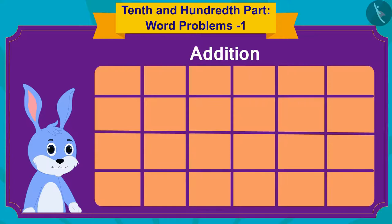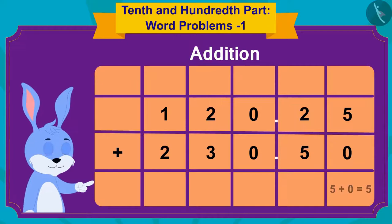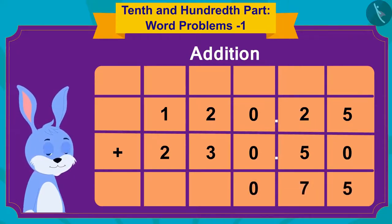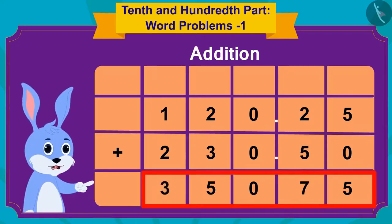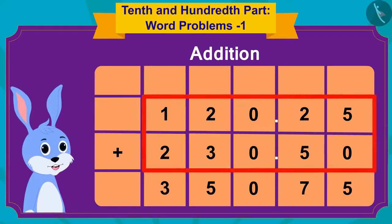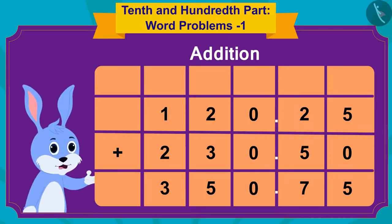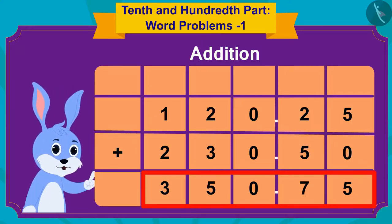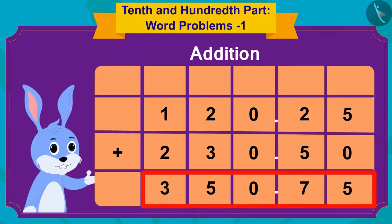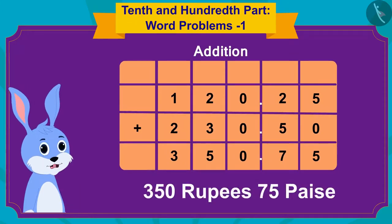Bunny immediately wrote this addition on a paper. I will first do this addition like a simple addition. This gives me 35,075. Now, because both these numbers have two digits after the decimal point, I will write a decimal point in this way in the answer. I now have a total of 350.75, or 350 rupees 75 paise.